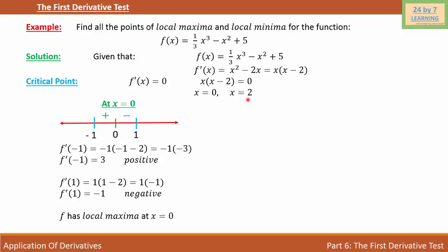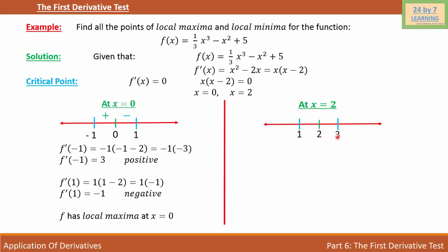Now let's consider x = 2. I'm going to consider a number line again. I want to consider a point on the left of 2, which is 1, and a point on the right, which is 3. Let's find the value of the first order derivative at 1: f'(1) = 1 times (1 - 2) = 1 times (-1) = -1. That is a negative number.